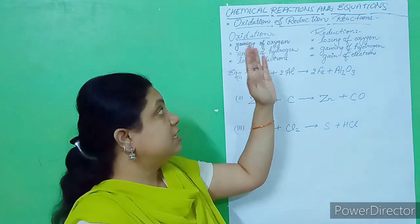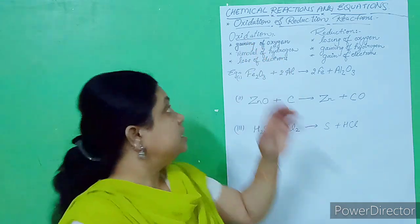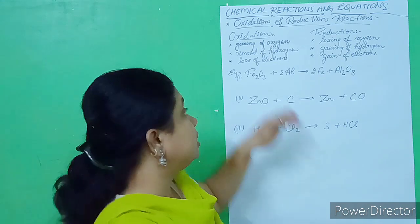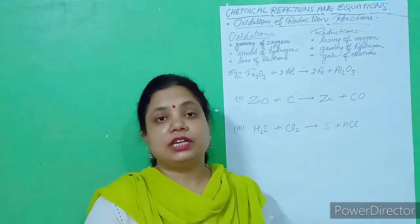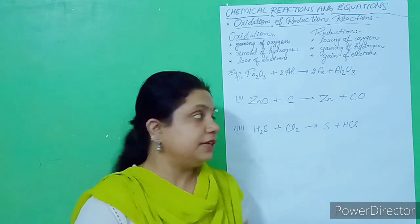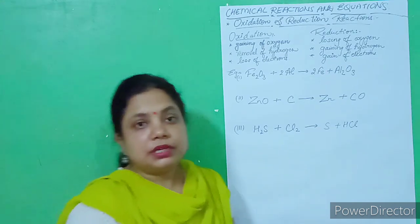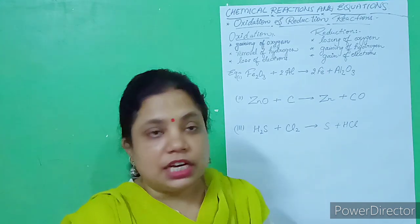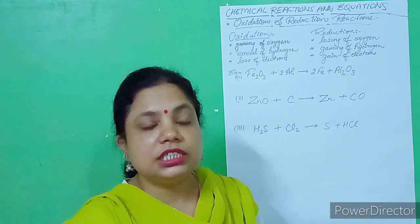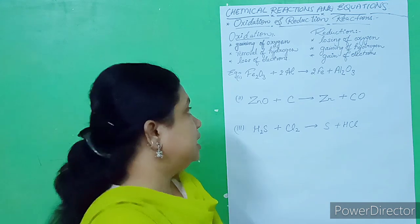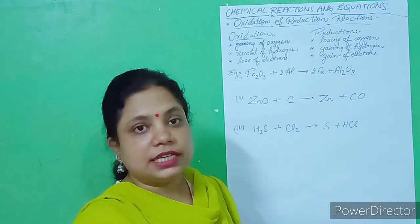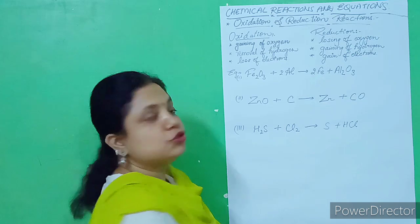In your syllabus, gaining and removing of oxygen and hydrogen are what you need to focus on, but the concept of loss and gain of electrons is for upper classes. Now let's see the first example to find where oxidation and reduction are going on: Fe₂O₃ plus 2Al.